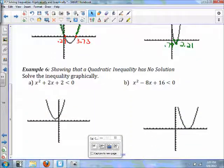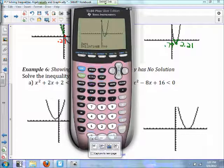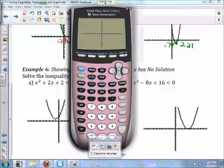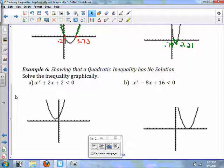Now we're moving on to example six. It says solve the inequality graphically. Well, if we put in our equation, x squared plus 2x plus 2. And the problem says we want to see where this is less than zero.